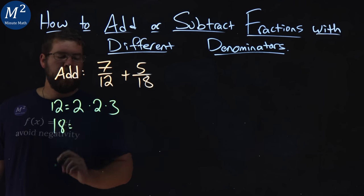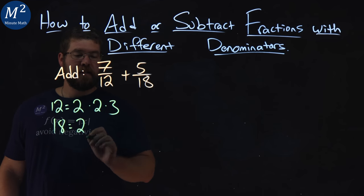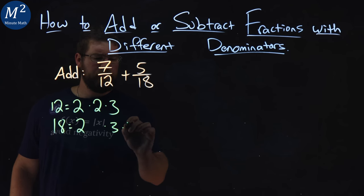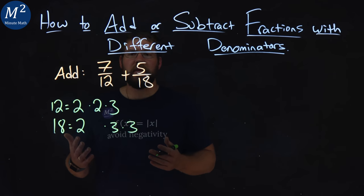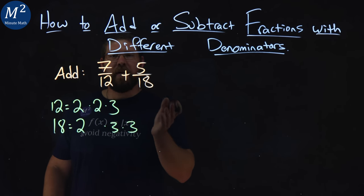What about 18? 18 divided by 2 is 9, and 9 is 3 times 3. If you need more practice with this, we have other videos about that in our earlier series.